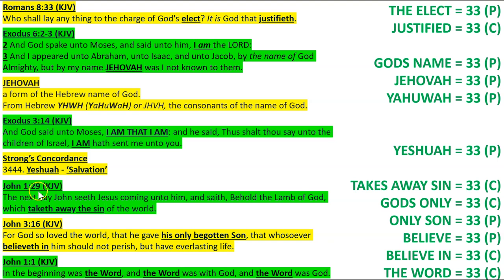John 1:29: 'The next day John seeth Jesus coming unto him, and saith, Behold, the Lamb of God, which taketh away the sin of the world.' Takes away sin — 33. John 3:16: 'For God so loved the world, that he gave his only begotten Son, that whosoever believeth in him should not perish, but have everlasting life.' God's only, only Son, believe, believe in — all 33. John 1:1: 'In the beginning was the Word, and the Word was with God, and the Word was God.' The Word — 33.